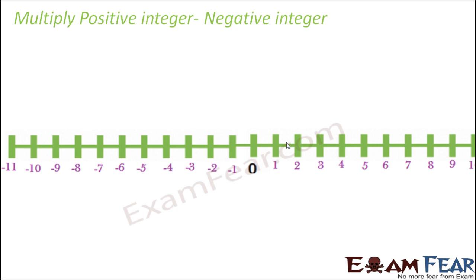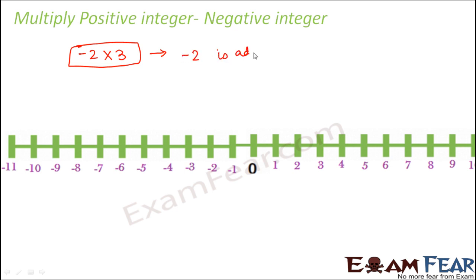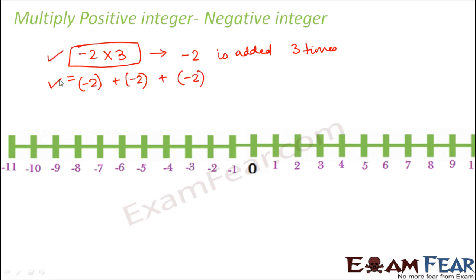First, let us talk about a positive integer multiplied with a negative integer. Let us take an example: multiply minus 2 by 3. What does multiplication exactly mean? This basically means that minus 2 is added 3 times. So minus 2 into 3 is the same as minus 2 plus minus 2 plus minus 2. Whenever you are multiplying two integers, that actually means one number is added that many times.